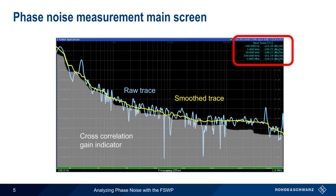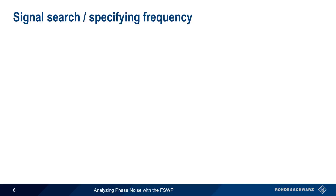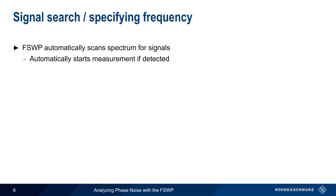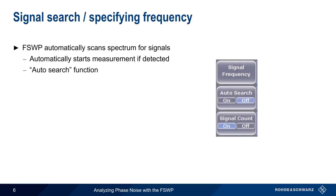In the remainder of this presentation, we'll explain how to modify default values and behavior, and how to use additional features to make and interpret phase noise measurements. When started, the FSWP automatically scans the spectrum looking for a signal. If one is detected, the measurement starts automatically. This auto-search function is enabled by default.